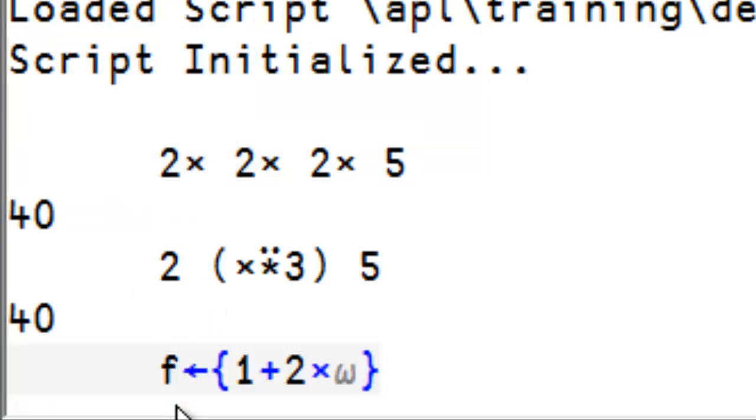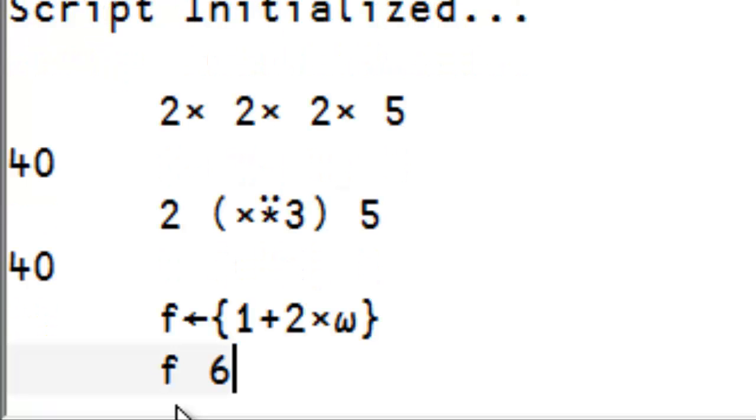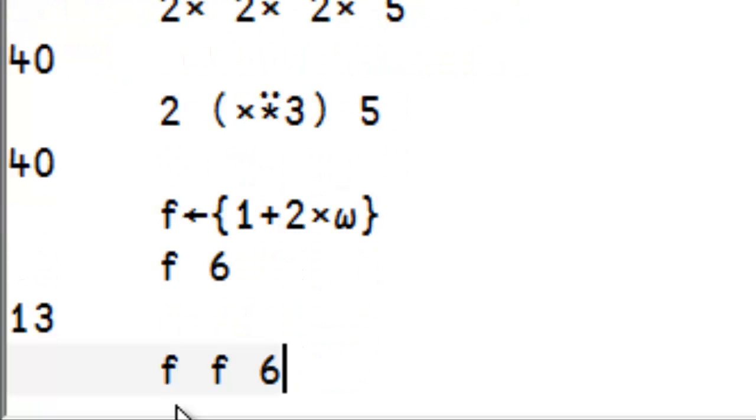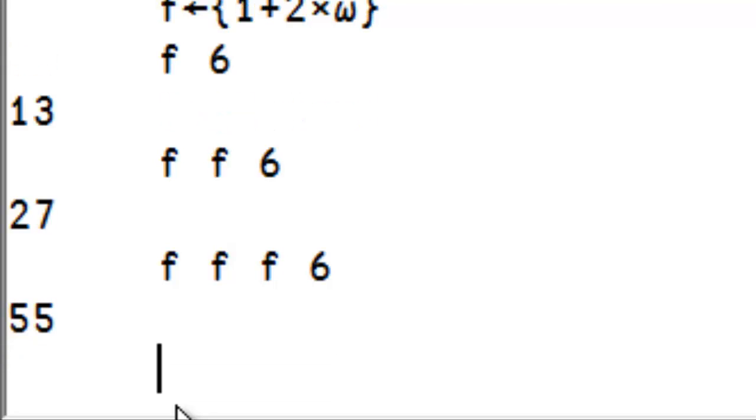This can also be applied to your old function. For example here, we have the function which adds 1 to the double of the argument. Applying the function once, twice,